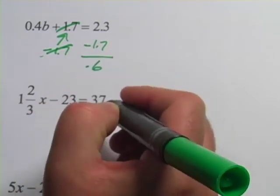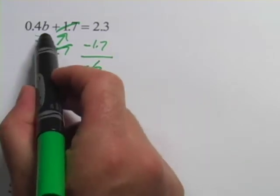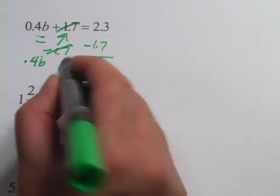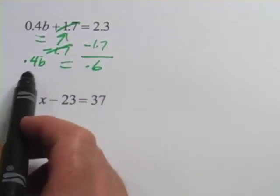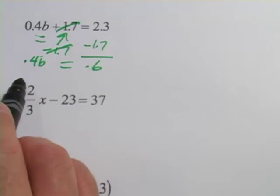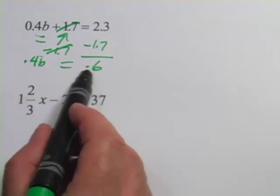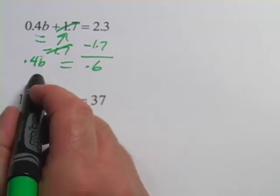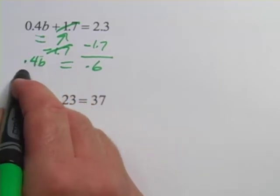You can check that out on your calculator. And then the 0.4b comes on down, 0.4b and our equal sign. So now we've got it down to this. We've got 0.4b on one side and equals 0.6 on the other side. The last thing to do here, to get b by itself, is to get rid of this 0.4, which is being multiplied to it.